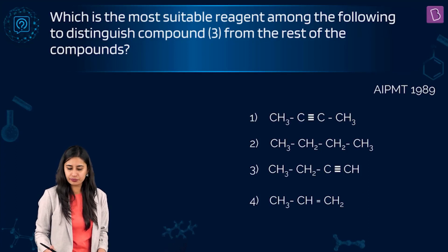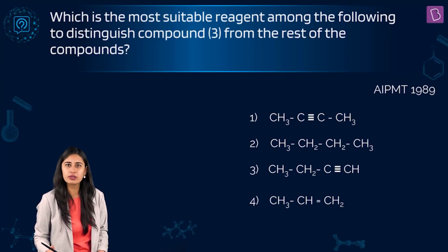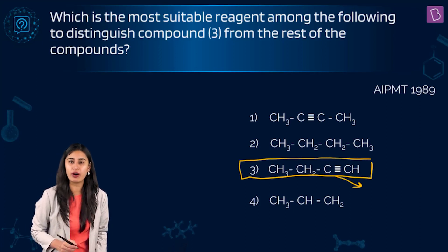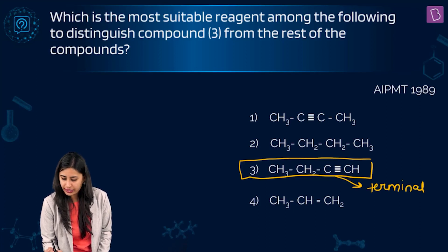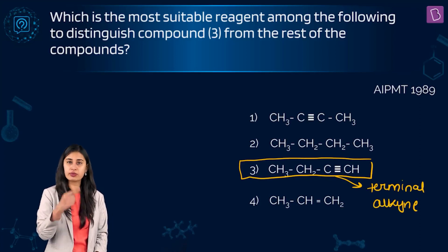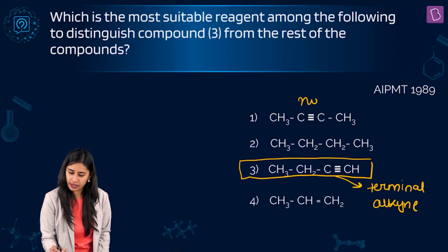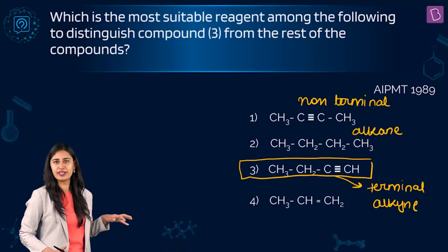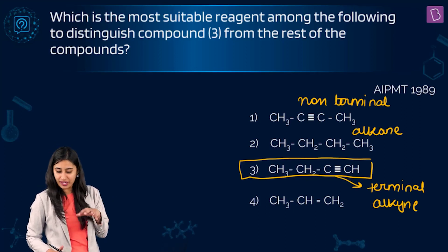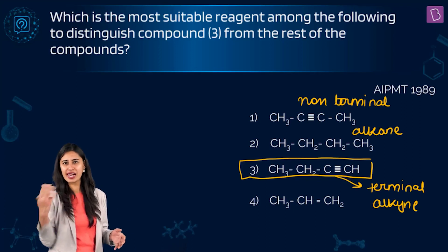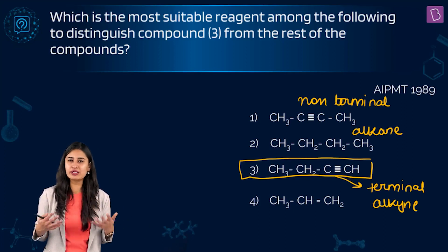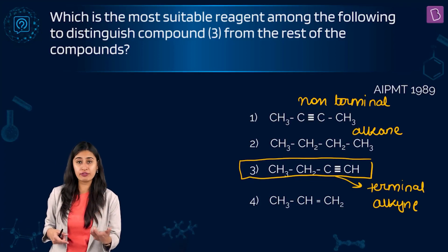The question is: which is the most suitable reagent to distinguish compound 3 from the rest? Compound 3 is a terminal alkyne. You have to distinguish it from the rest — which are a non-terminal alkyne and an alkane. Can we use ammoniacal silver nitrate to distinguish the terminal alkyne from an alkane? Of course — the terminal alkyne will give a white precipitate whereas the alkane will have no reaction. What other methods have you learned to distinguish an unsaturated compound from a saturated compound?